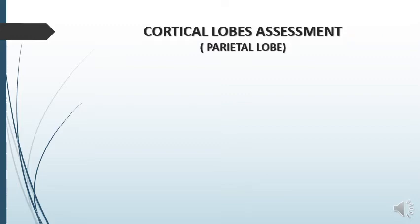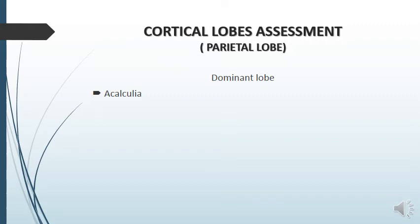If a patient has dysphasia, disorientation, or impaired cognitive functions, it is important to do assessment of various cortical lobes. First, we will discuss the assessment of parietal lobes. The parietal lobe assessment can be done in two steps. First, we will discuss dominant lobe assessment, in which we will perform various tests. First, we will look for acalculia, in which the patient will not be able to perform simple mathematical calculations.